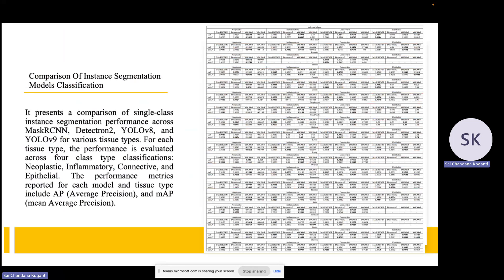This is the visualization of single-class instance segmentation performed only on the PanNuke dataset. I used Mask R-CNN, Detectron2, YOLOv8, and YOLOv9, and the evaluation metrics used are AP and mAP — average precision and mean average precision.